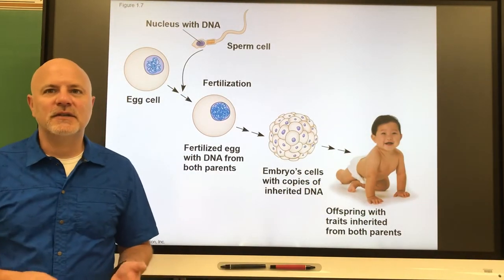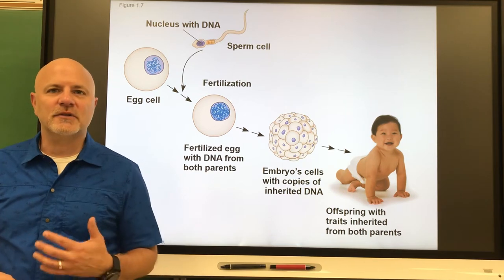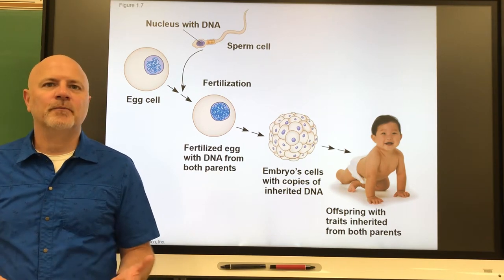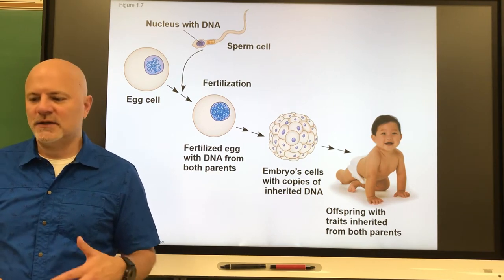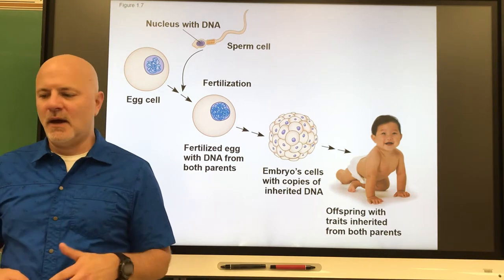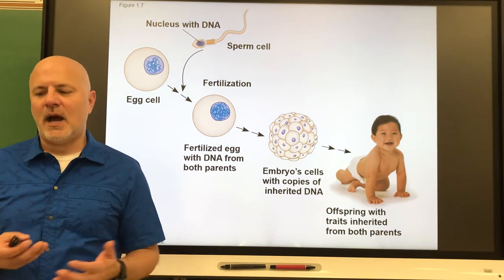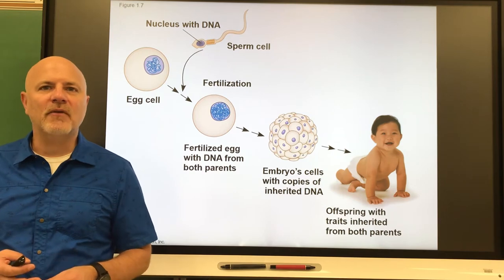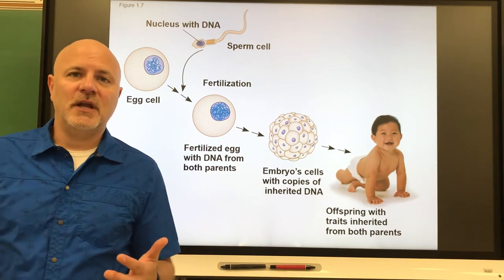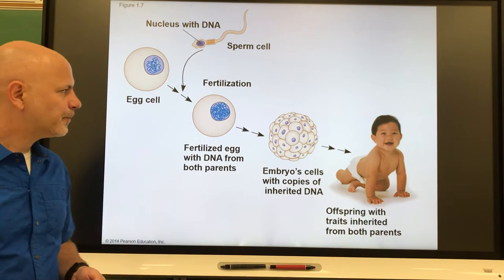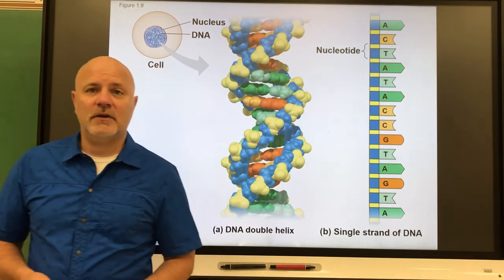The next theory is the gene theory. The gene theory states that organisms contain coded information that determines their form, function, and behavior. Our genes tell us what we look like, how our body works, and how we're going to behave for the most part, though the environment will influence all of those as well.